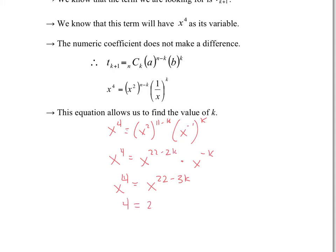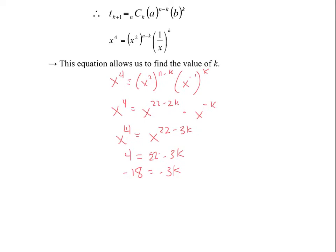So you have 4 equals 22 minus 3k. All I have to do now is solve for k. Bringing 22 over, you get negative 18 equals negative 3k, and dividing by negative 3 on each side, you get k equals 6. That tells us that term 7 is the term we're looking for, because if k equals 6 and your term is k plus 1, term 7 is the term we're looking for.